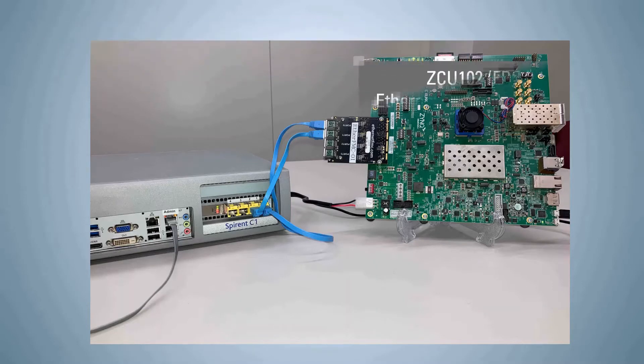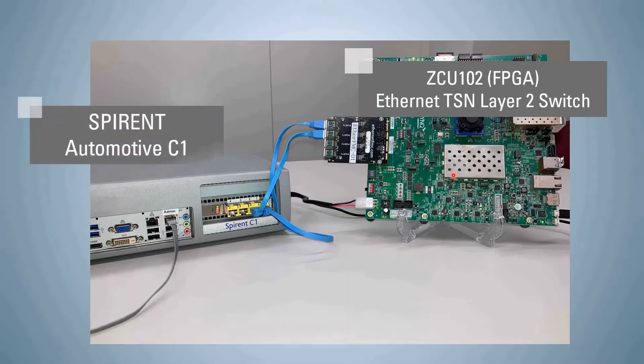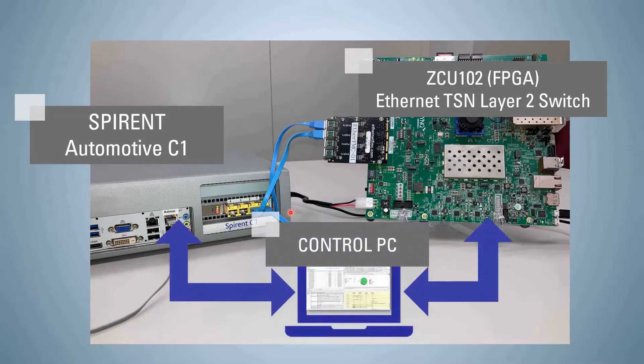This is the demo environment. Switch IP is implemented in this FPGA. The FPGA and Automotive C1 are connected by an Ethernet cable. Automotive C1 and FPGA are each connected to the control PC. We can also issue commands from the control PC to FPGA. In addition, Spirent's TT Workbench tool is installed on this PC, and various TSN tests can be executed automatically.